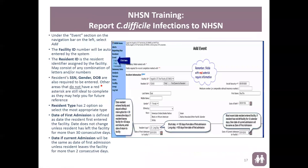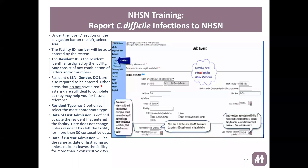Now we're going to go over reporting an event, if there is one to report. If you do not have an event to report for a certain month, skip this step. To add an event, go to Event, then Add. On the Add Event pop-up, the facility ID is defaulted and will appear automatically. The resident ID needs to be created by you — most facilities use the medical record number because it's easy to track. You can use the same resident ID number to pull a report for all events reported for a specific resident by typing it in the filter section. You can also search by name or event date.